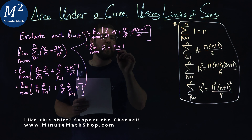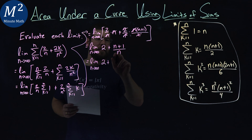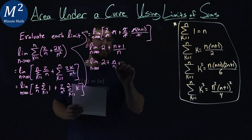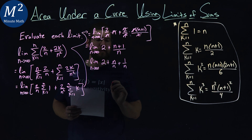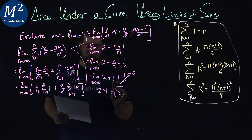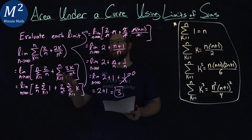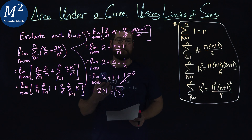The limit as n goes to infinity of 2 plus — we can separate (n plus 1) over n into n over n plus 1 over n. So the limit as n goes to infinity of 2 plus 1 plus 1 over n. At this point I can take the limit: as n goes to infinity, 1 over n goes to 0. So we're left with 2 plus 1, which is 3. My final answer for evaluating this limit is 3.